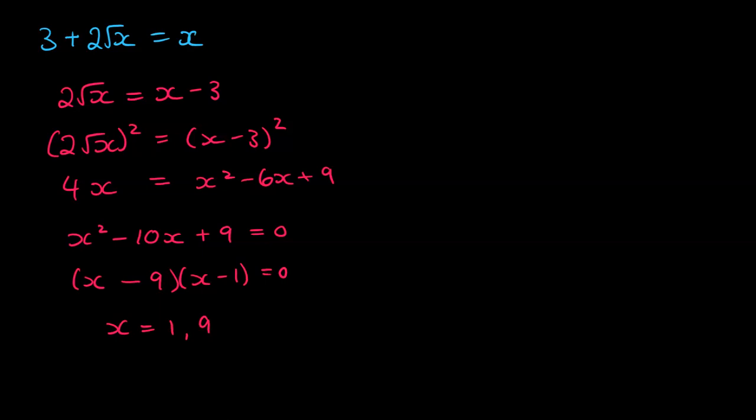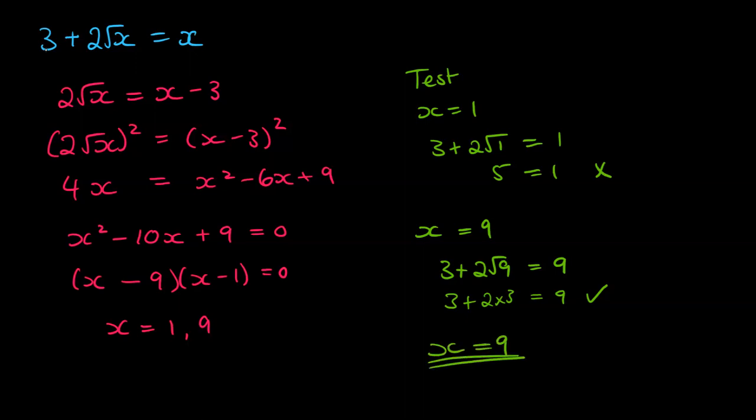And all that's left to do is to check for validity. So we test them out. So if x is 1, we get 3 plus 2 root 1 is equal to 1. So root 1 is just 1. 3 plus 2, well, that's 5 equals 1. That's not a valid solution. If we try x equals 9, we get 3 plus 2 root 9 is equal to... Actually, no, it's equal to 9, x being 9. So we can check that 3 plus 2 times 3 would equal 9. Yes, that is true. So our final answer is that x equals 9 is our valid solution.